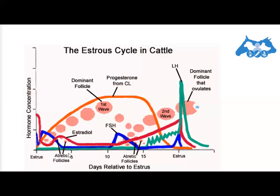The blue line represents FSH. At the start of the cycle FSH is increased, but as atretic follicles dominate its concentration decreases until days 10 to 11, when it starts to increase alongside estradiol. After the first wave, atretic follicles again dominate and FSH concentration drops, but at the time of ovulation after the second wave, FSH, estradiol, and LH are all at peak levels before ovulation.